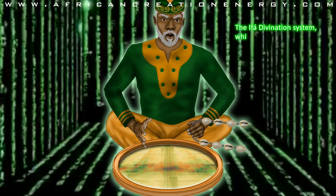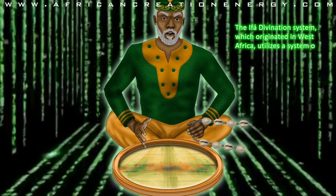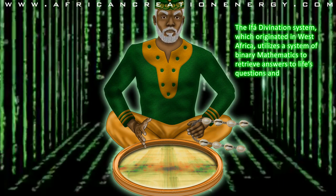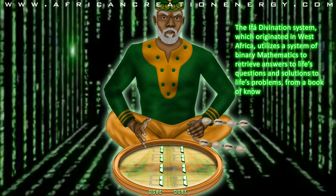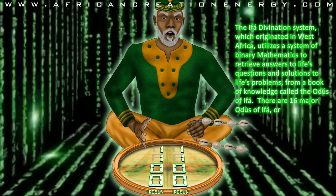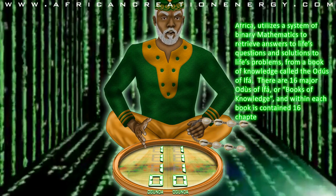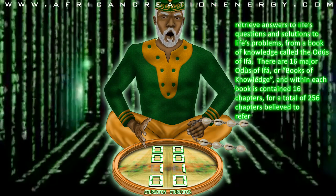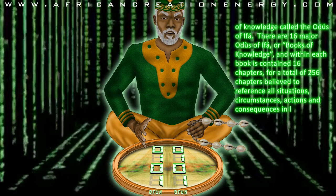The Ifa divination system, which originated in West Africa, utilizes a system of binary mathematics to retrieve answers to life's questions and solutions to life's problems from a book of knowledge called the Odus of Ifa. There are 16 major Odus of Ifa, or books of knowledge, and within each book is contained 16 chapters, for a total of 256 chapters believed to reference all situations, circumstances, actions, and consequences in life.